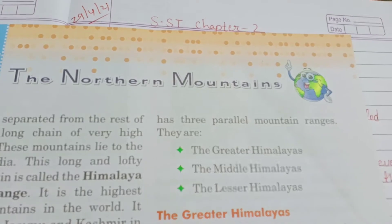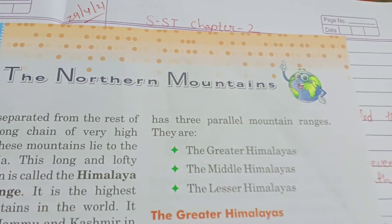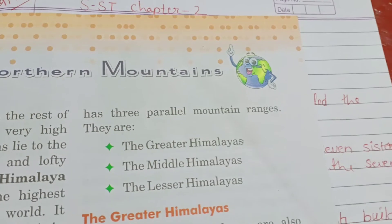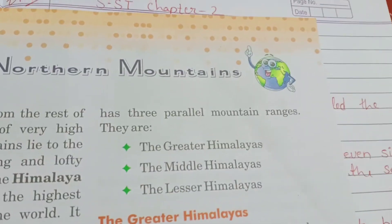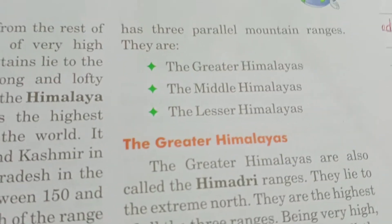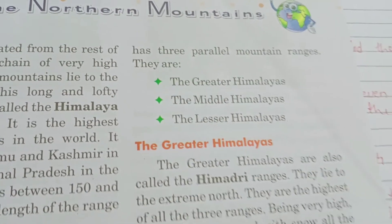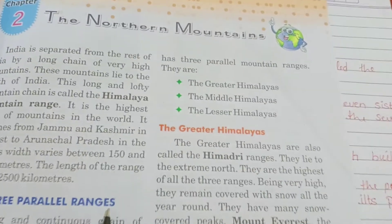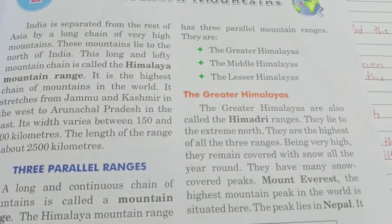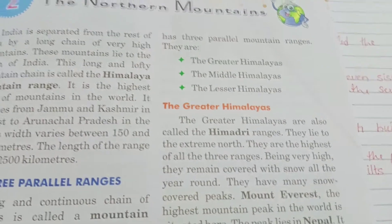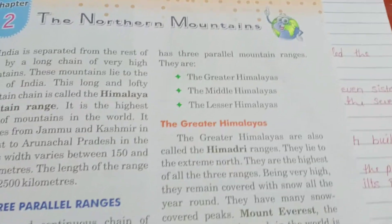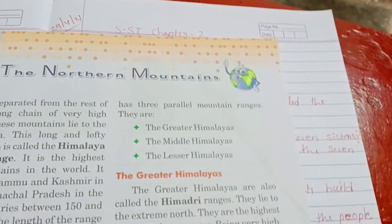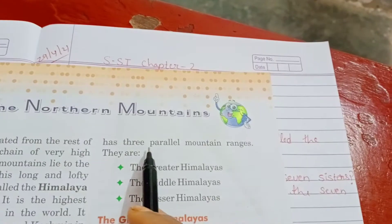From Jammu and Kashmir in the west to Arunachal Pradesh in the east, the width of the range is about 150 km and the length of the range is about 2500 kilometres. A long and continuous chain of mountains is called a mountain range.